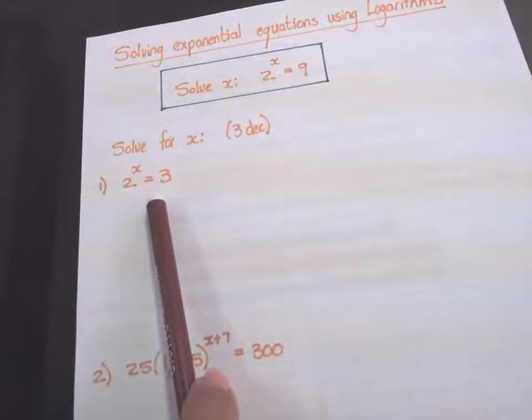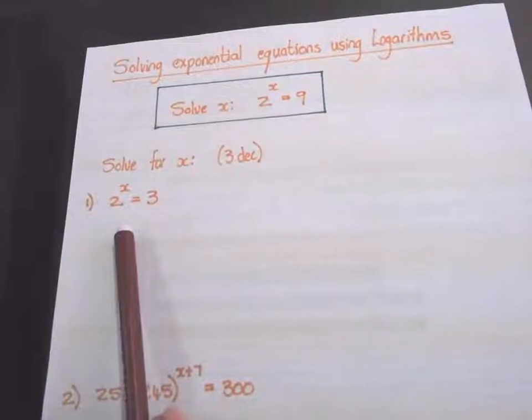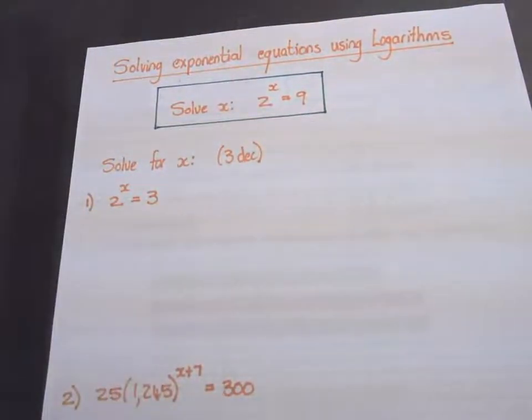Let's look at our first example. These examples are not on your notes. 2 to the power of x equals 3.